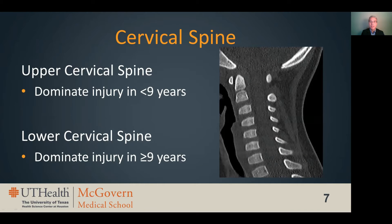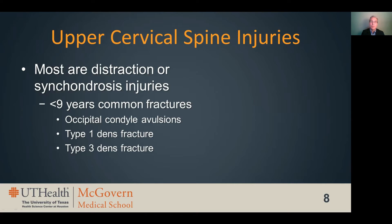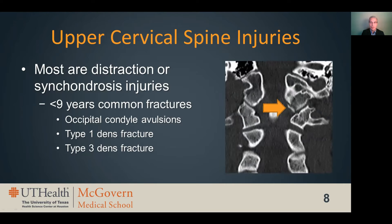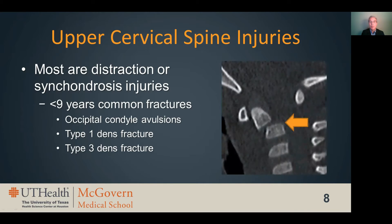Now let's dive into the diagnosis of cervical spine injuries. Just like in the adult spine, it can be beneficial to think of pediatric cervical injuries in terms of upper cervical injuries above the C2-3 level and lower cervical injuries. Upper cervical spine injuries are the predominant injury pattern in patients under the age of nine, while lower cervical spine injuries dominate in patients nine years and older. In kids, most upper cervical injuries will be distraction-type injuries or fractures through the synchondroses. The most common fractures are avulsions of the occipital condyles and type 1 dens fractures, which are avulsion fractures through the synchondroses of the C2 vertebral body.